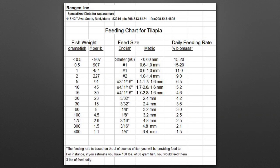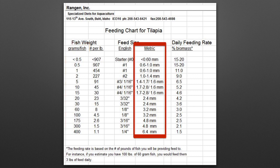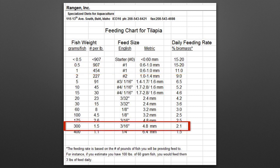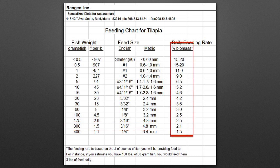This feeding chart illustrates another set of recommendations. On one column you see the fish size, and based on that size you determine the pellet size. For example, for fish of about one gram, the recommendation is 0.6 to 1 millimeter feed; for fish of about 300 grams, 4.8 millimeter feed is recommended. The daily feeding rate is based on the percent biomass of the fish you have at a particular time during grow-out.